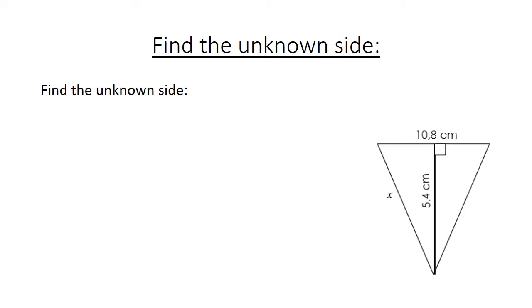Find the unknown side. The 10.8 cm. You must divide by 2. We are only going to use one of the triangles. Equals 5.4 cm. X to the power of 2 equals 5.4 cm squared plus 5.4 cm squared. And the reason is Pythagoras.